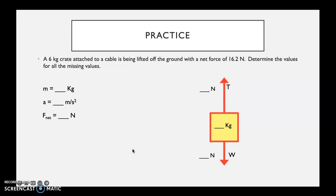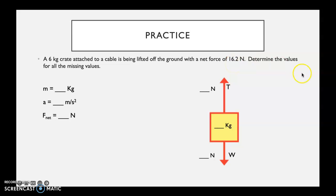In the next example — similar to what you'll see on the test — we have a 6-kilogram crate attached to a cable being lifted off the ground with a net force of 16.2 newtons. We want to determine all of the missing values.